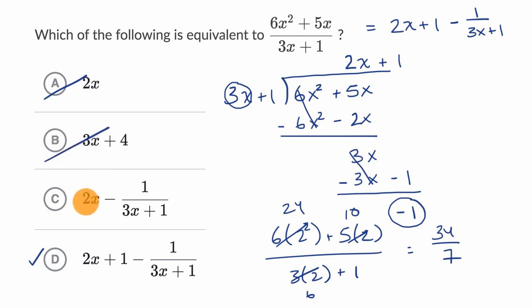You put two here, you get four minus one over, let's see, it looks like one over three times two is six, plus one is seven, so minus one seventh. And let's see, four is the same thing as 28 over seven, minus one seventh, which is equal to 27 over seven, still not 34 over seven.